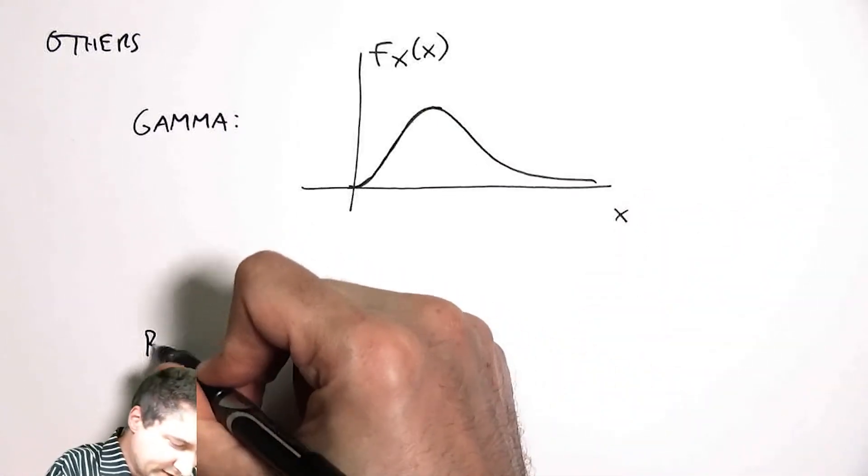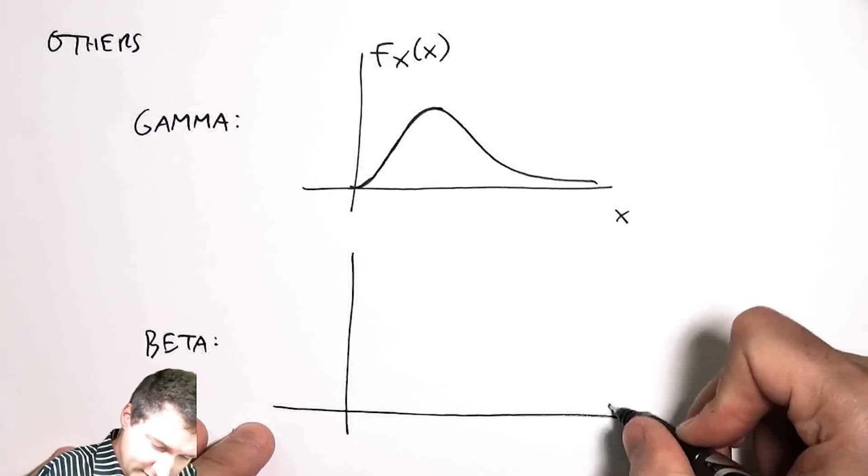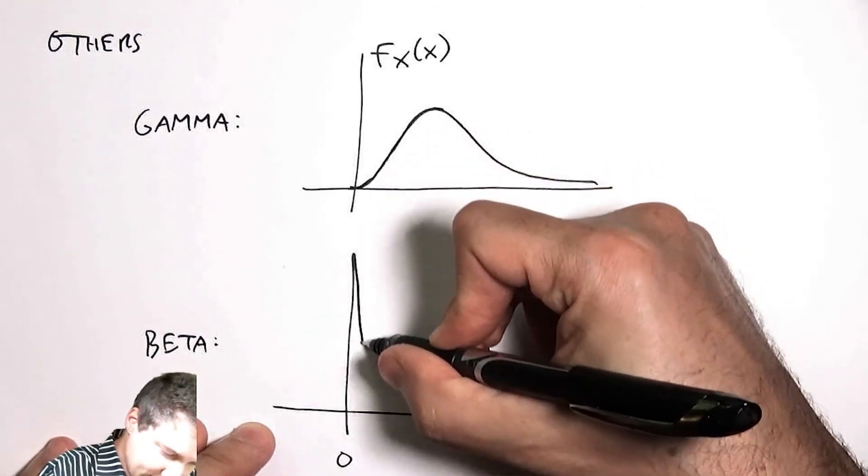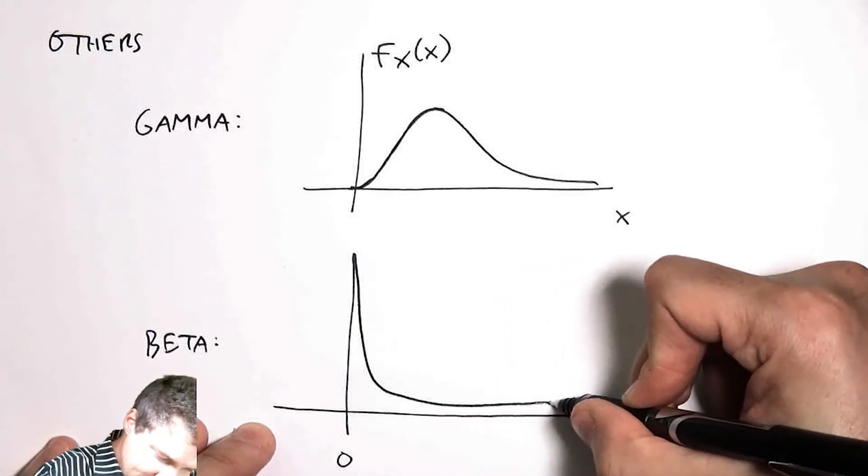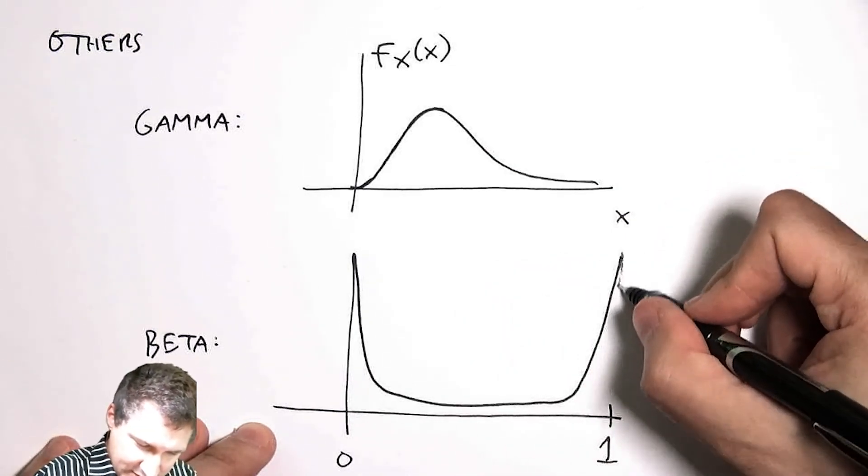Another one that's sometimes useful is what's called the beta distribution. That one is defined between zero and one, and it's big at the ends and low in the middle.